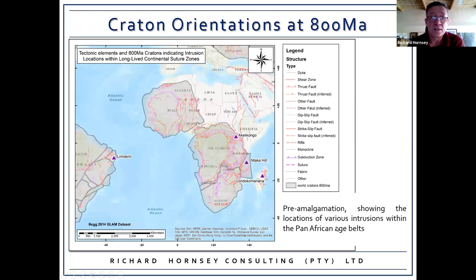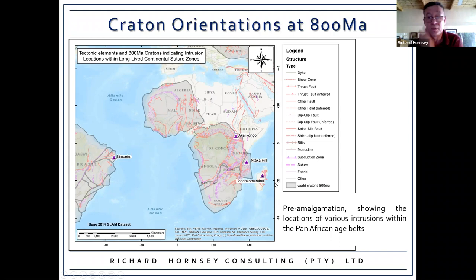The GLAM dataset — Graham Begg's continent reconstruction and mapping through time — shows the cratons oriented at 800 million years with all the various interpreted deformation and structural trends. It's a little schematic — for instance the lower part of Africa wasn't amalgamated at this time — but it's still of use.